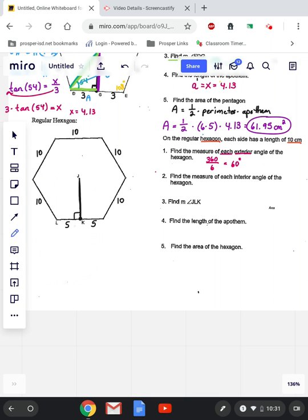Number two, find the measure of each interior angle of the hexagon. So for each interior, we have to take our interior angle formula, n minus 2, or 6 minus 2, times 180, divided by n. And n, in this case, is 6.